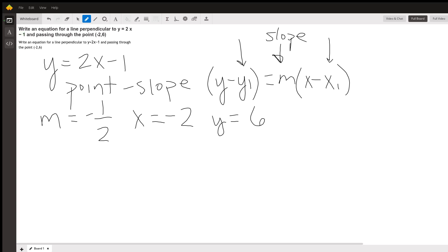The reason why your slope is negative one-half is because they give you the equation here, y = 2x - 1, and they want you to write the equation for a line that is perpendicular to it.